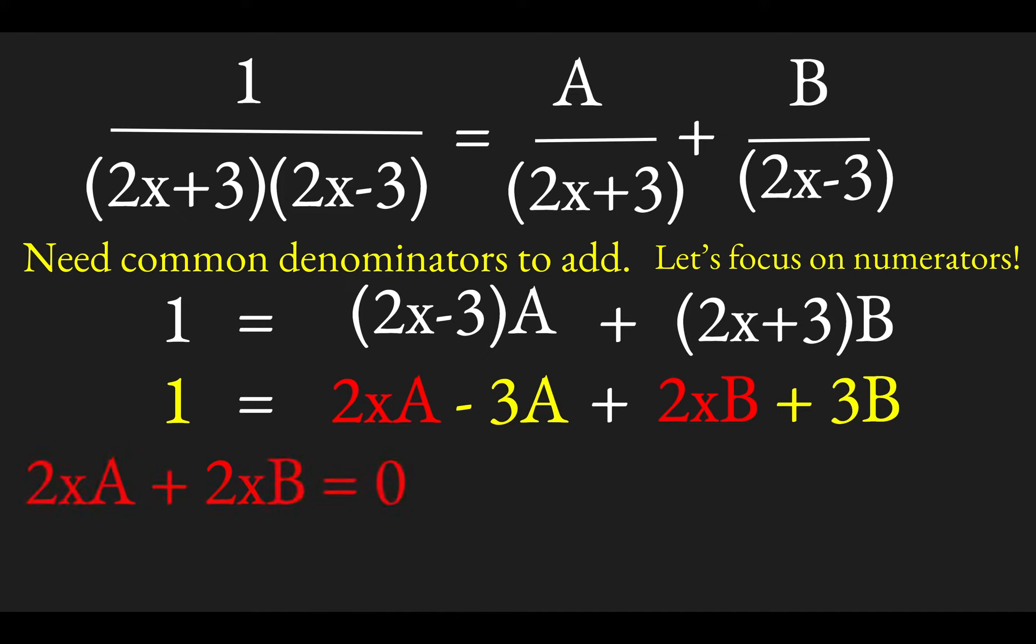Well, so let's check this out. If we set the red terms then equal to 0, because there is no term of order x over here, we have 2xa plus 2xb equals 0. Well, clearly then what that means is a and b are the negatives of each other. And then if you look at the yellow terms, minus 3a plus 3b is going to have to be equal to 1.